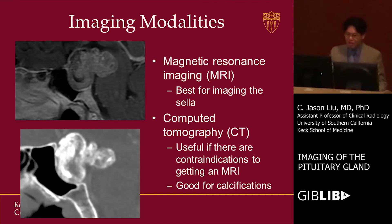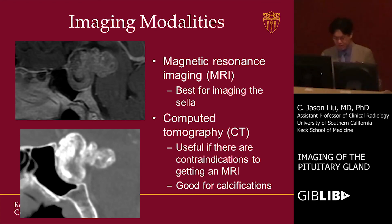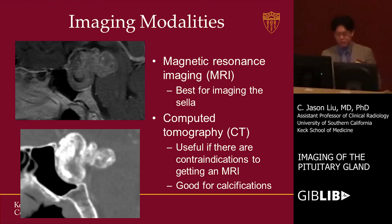One area where CT potentially excels compared to MRI is in the quantification of calcification. This is the CT of the very same patient. We can see portions of the tumor that are very dark on the post-contrast MRI image — as radiologists, we know that could potentially be from calcification. Indeed, on CT we see bright spots in those same areas corresponding to calcium. MRI tends to underappreciate just how heavily calcified the mass is, and knowing that a mass has a lot of calcium is clinically important.